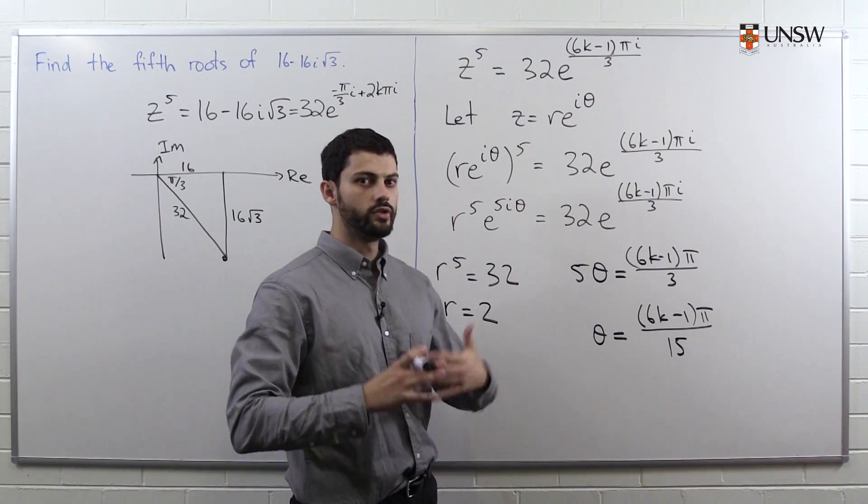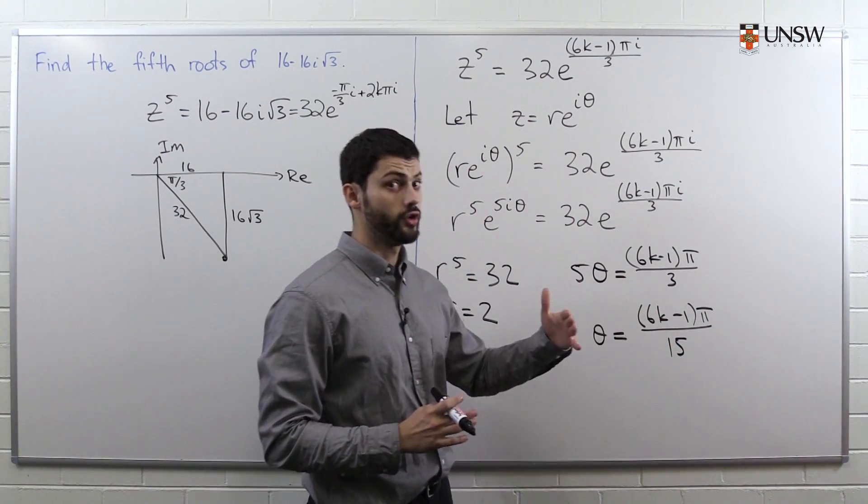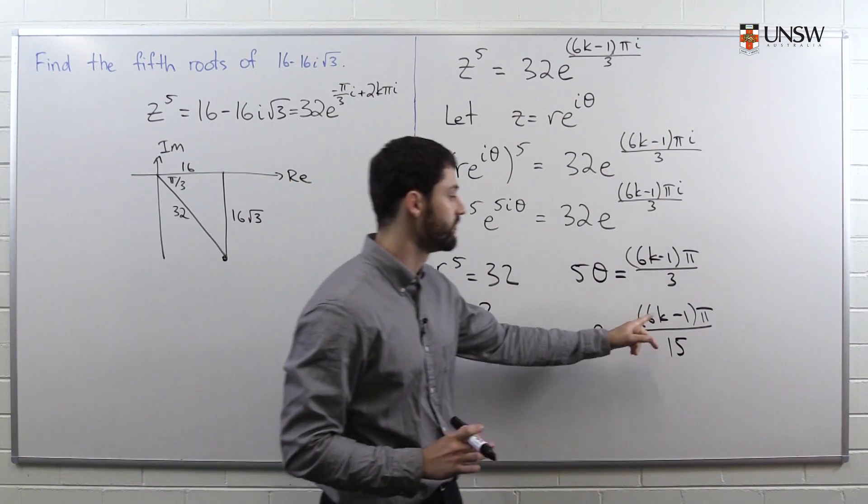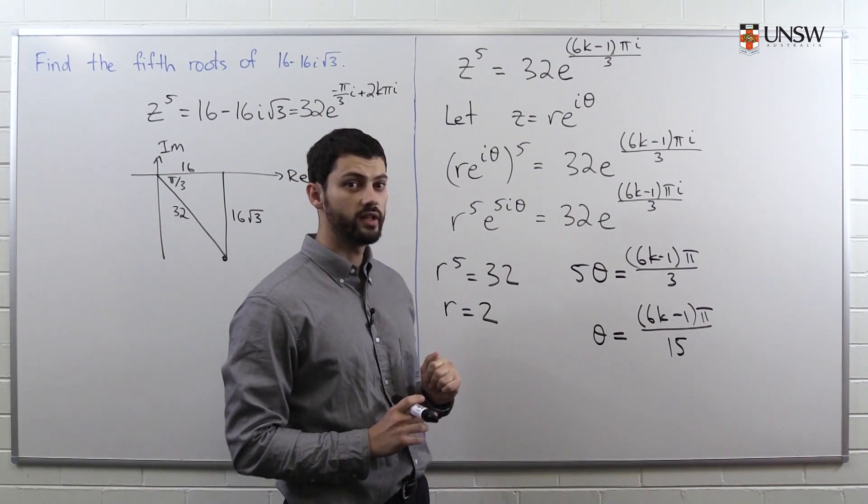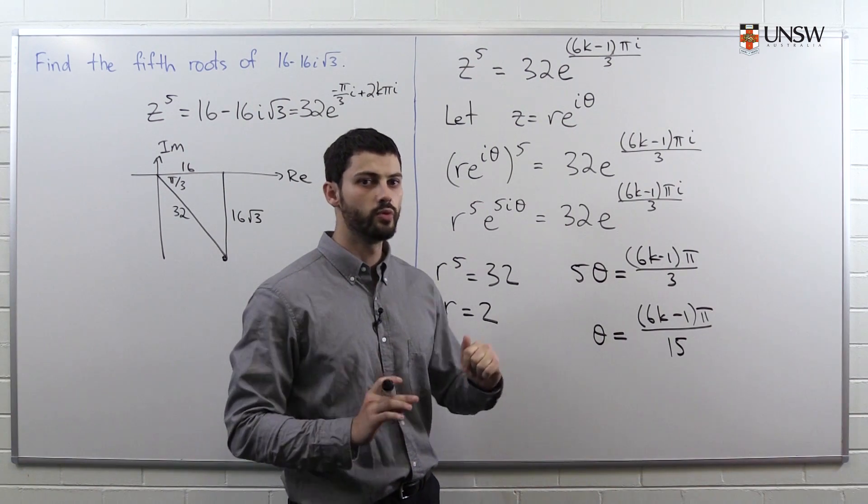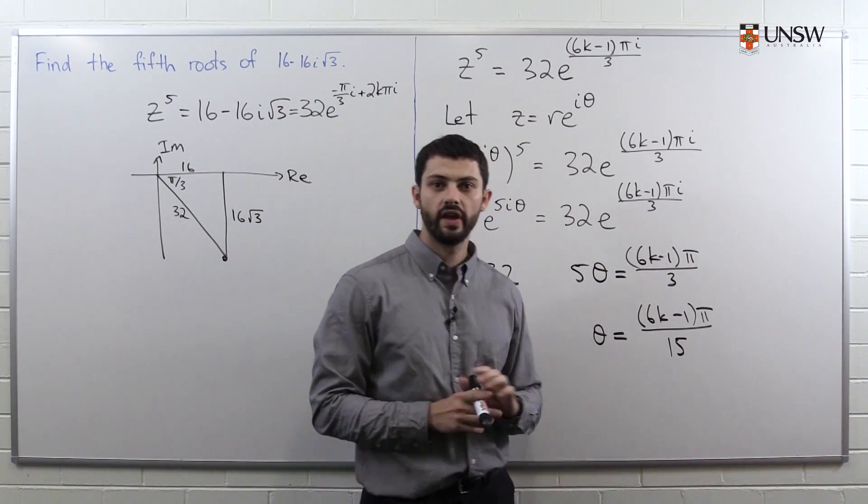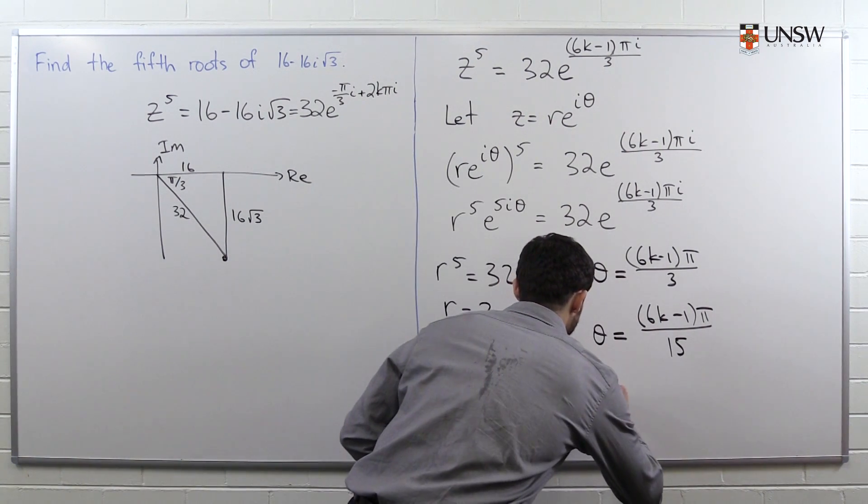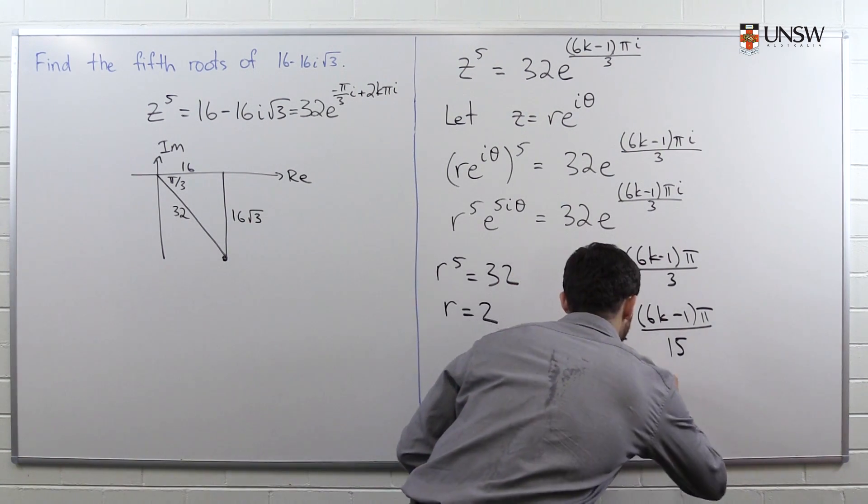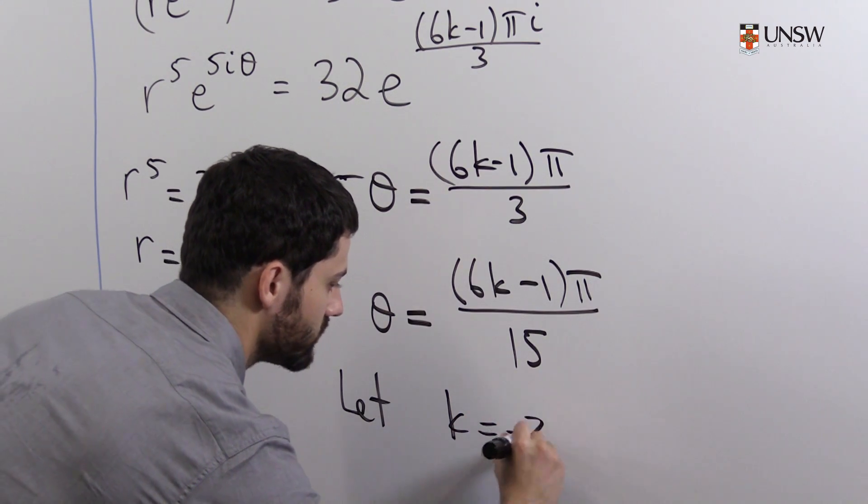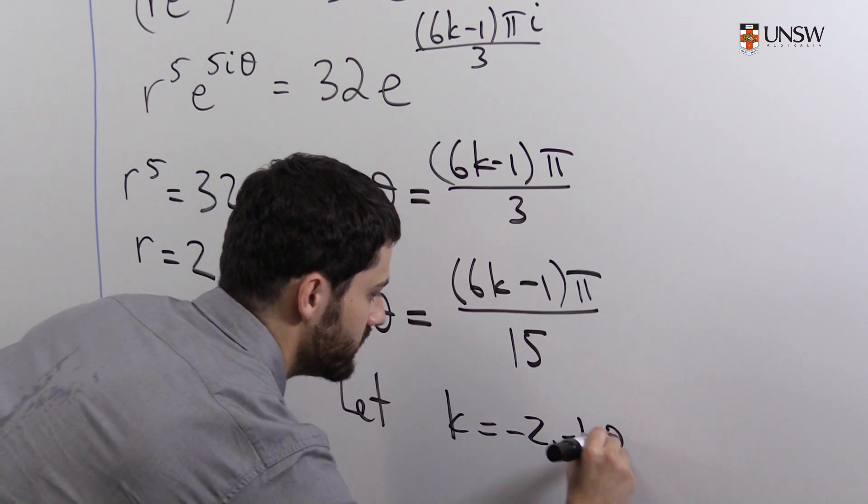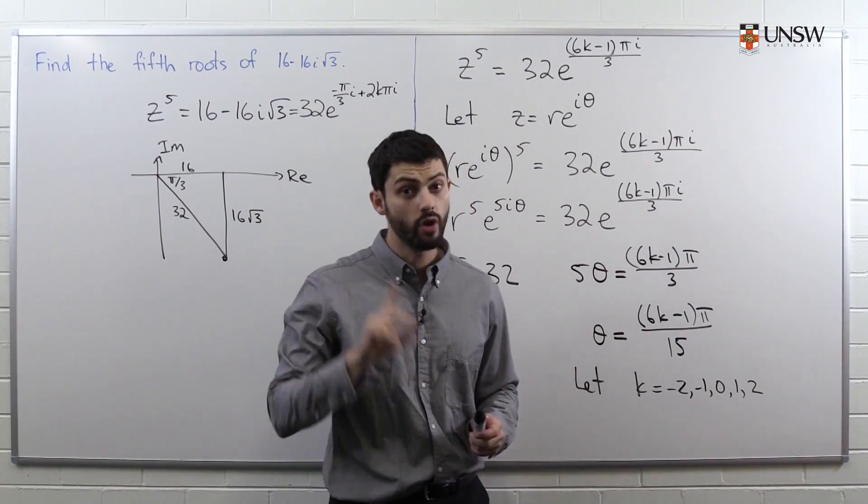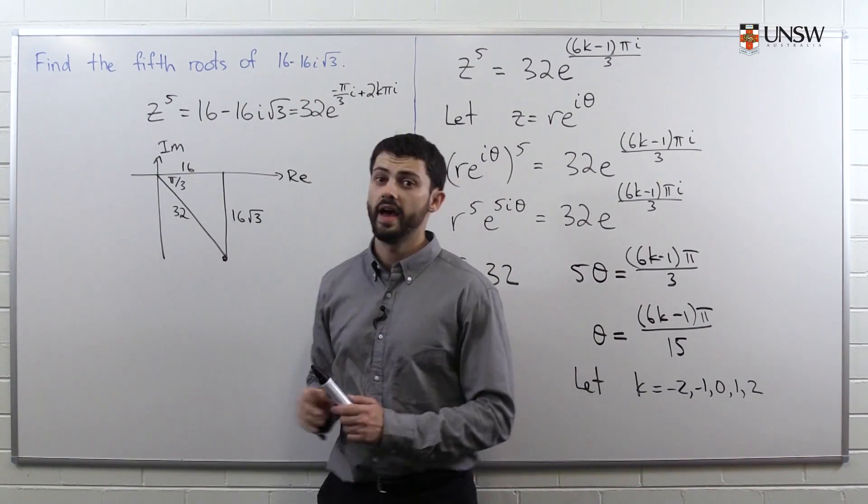The only difference is that 5 values of k will give you a principal argument, so an argument between minus π and π. And the other values of k are going to give you a non-principal argument. And then you'll have to do more work to convert your answer to a principal argument. But if we're careful and we choose 5 values of k correctly straight away, we won't have to do any more work. And usually, the values of k that you need to choose are the ones that are evenly balanced around 0. So in this particular case, we're going to let k equal -2, -1, 0, 1, 2.